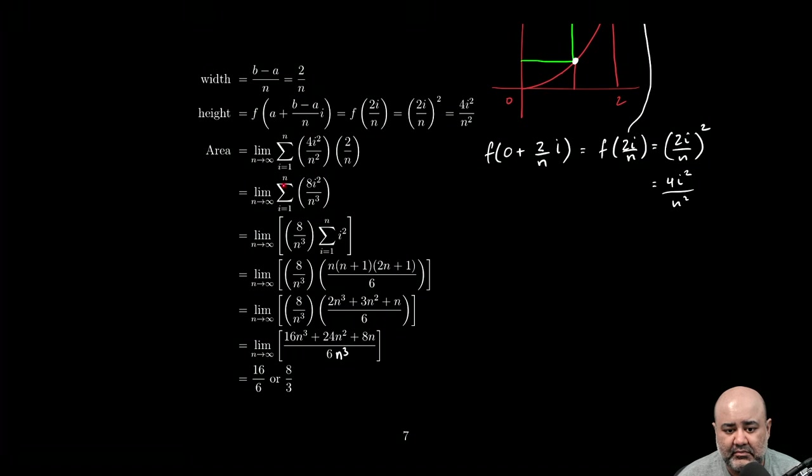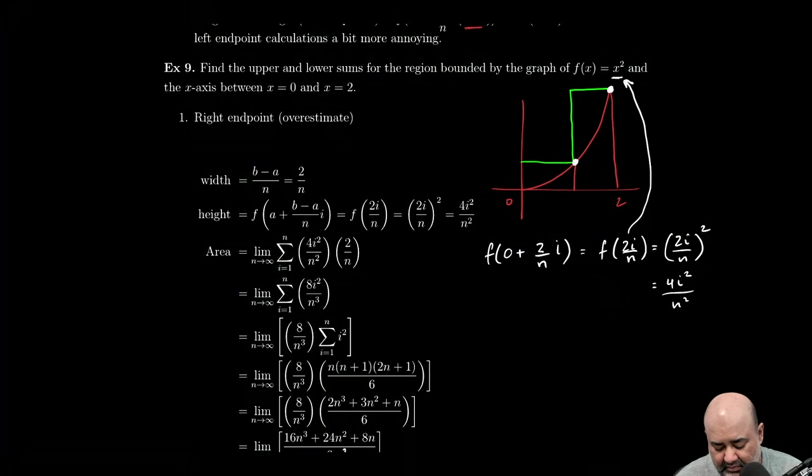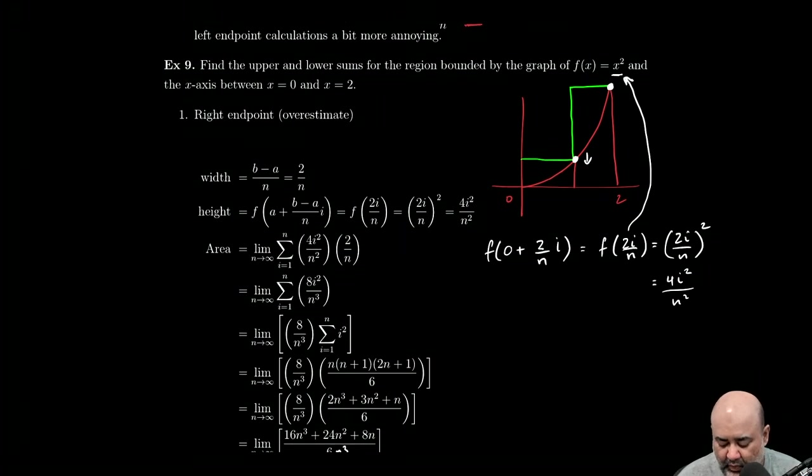We say, hey, this is a finite sum. But what happens if you take the limit as N pushes off to infinity? Well, now you can take the limit of this expression because there's no sums anymore. If you take the limit of this expression, you'll notice that the degrees of the numerator and the denominator are the same, which means you take the ratio of the leading terms or the leading coefficients, 16 over 6, which reduces to 8 over 3.